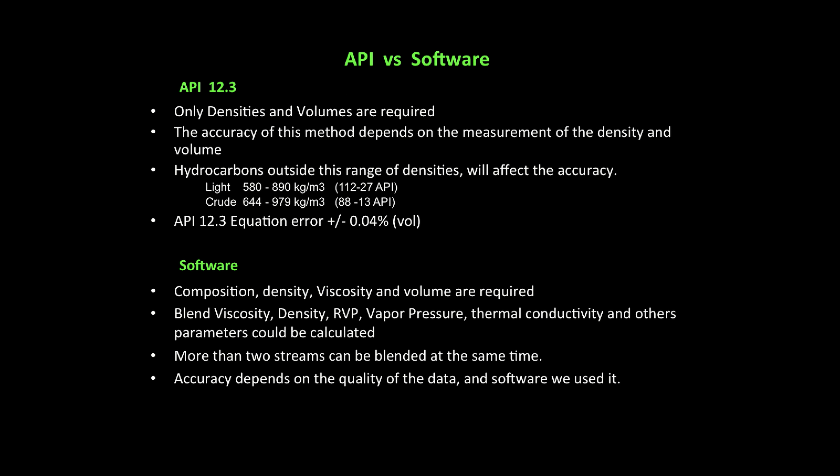In summary, to calculate shrinkage using the API method, only density and volumes are required. Therefore, the accuracy of this method depends on the measurement of these parameters, and crude oils outside of the applicable density range will affect accuracy. To calculate shrinkage using software, it works for a wide range of densities and gives more results such as vapor pressure, viscosity, thermal conductivity, and others. Personally, I prefer to use software over the API standard. For both cases, when accuracy is required, a lab test is recommended.